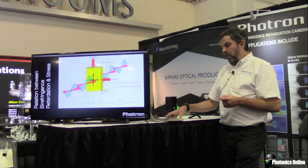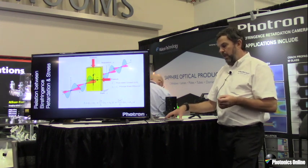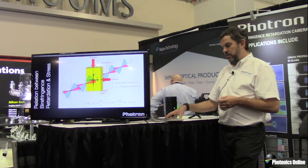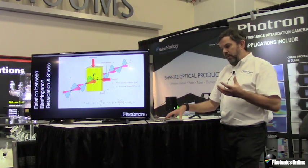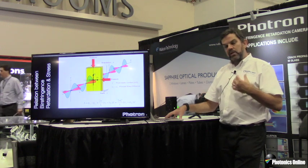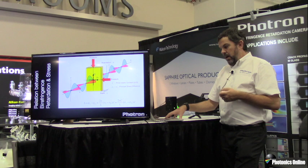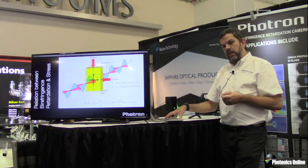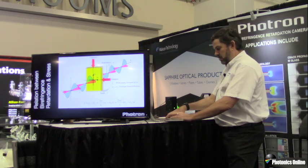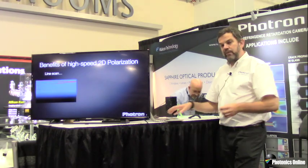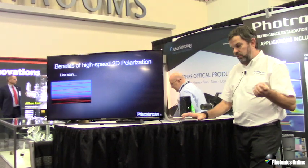There have long existed systems that enable researchers to view some level of polarized representation of the subject, but these tend to be either a static view or a very slow-speed scan system that utilizes a physically rotating polarizer wheel, or alternatively a single-point measurement — effectively a line scan system where a single point is measured as it scans across the system.